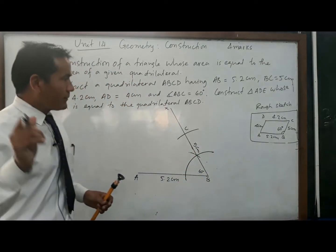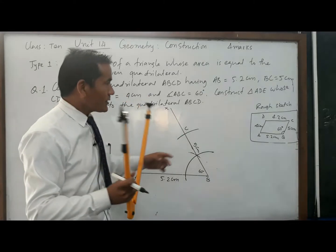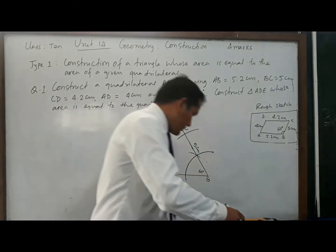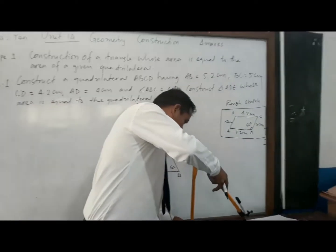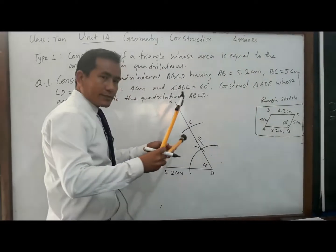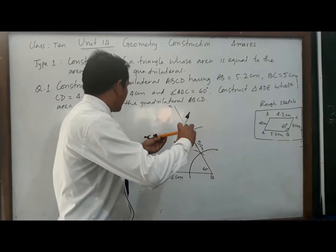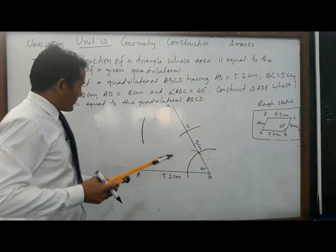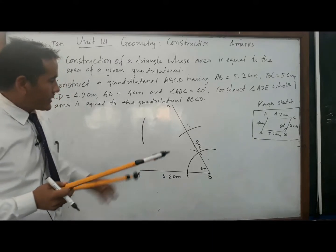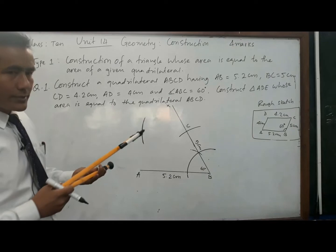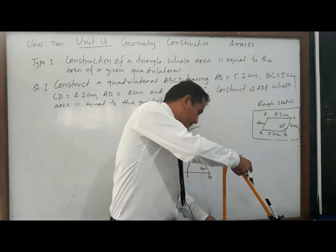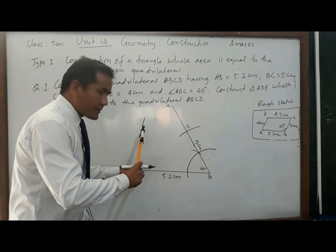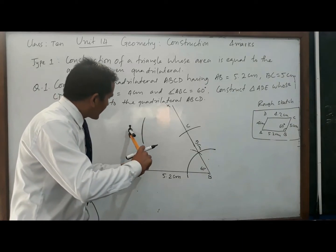Again, taking C as center, CD is 4.2 cm — measure 4.2 cm with the scale and draw an arc from point C. Now from point A, taking A as center, AD is 4 cm — measure 4 cm on the scale. Taking A as center with radius 4 cm, cut the previous arc to find point D.